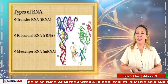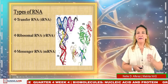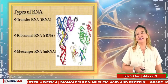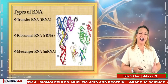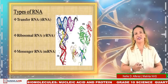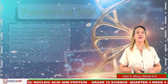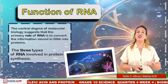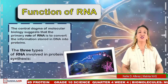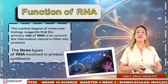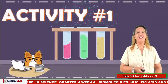The three types of RNA are: transfer RNA (tRNA), ribosomal RNA (rRNA), and messenger RNA (mRNA). Each has a role in protein synthesis. The central dogma of molecular biology suggests that the primary role of RNA is to convert the information stored in DNA into protein.